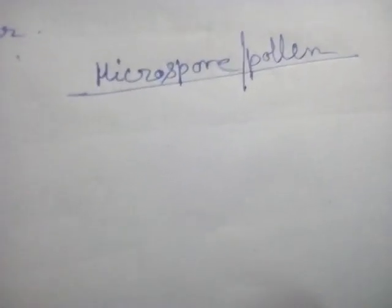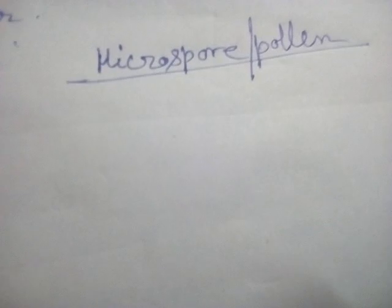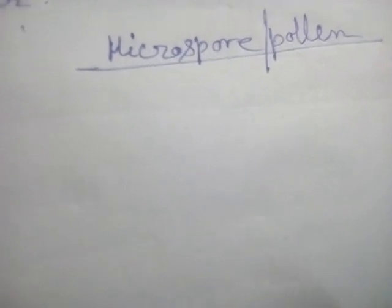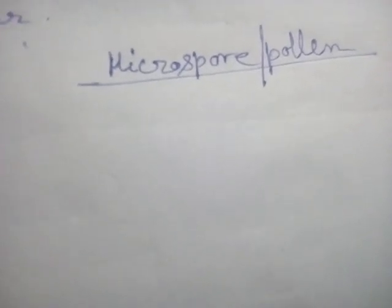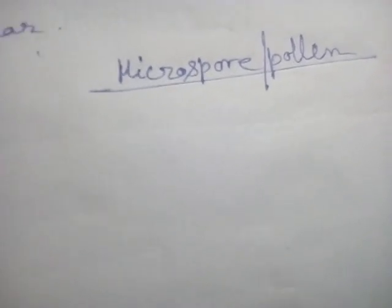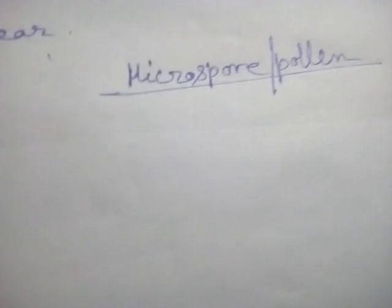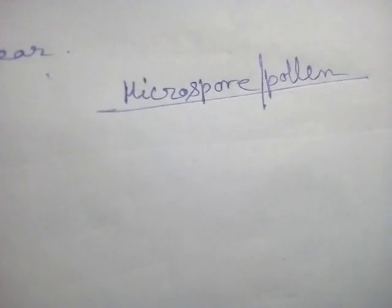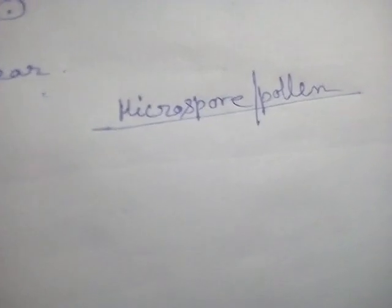Regarding the shape and size of microspores: microspores are of different shapes and sizes. They may be ellipsoidal, circular, oval, or somewhat elongated. Sometimes microspores may be triangular in shape. The outer wall of the microspore is known as the sporoderm; the sporoderm is the wall of the microspore.